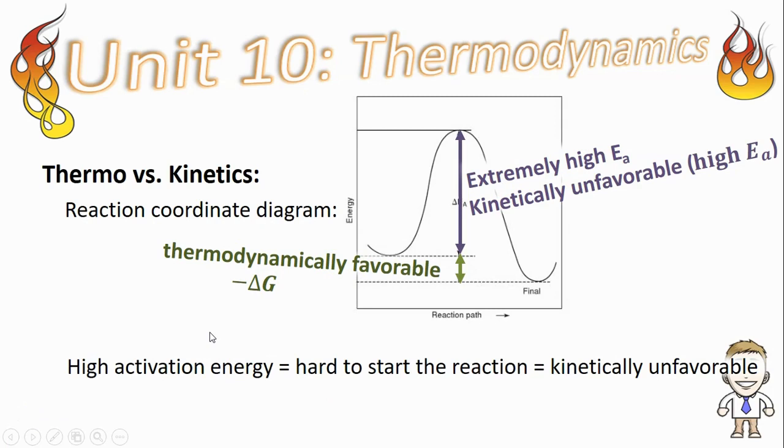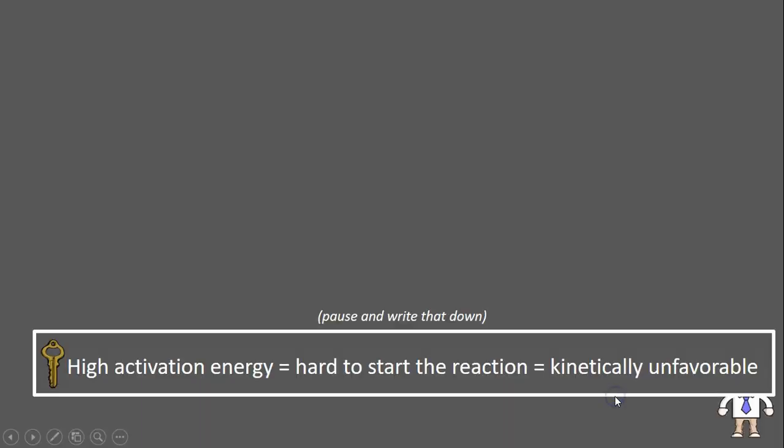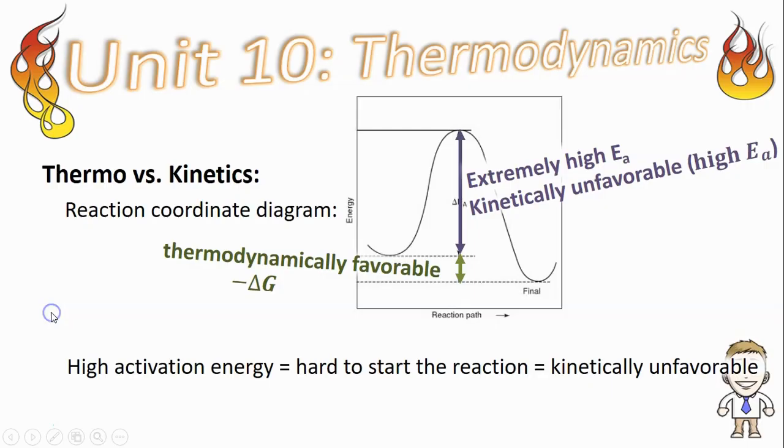A nice series of summary statements to describe this can be found below. High activation energies result in a reaction that's very hard to start or very slow. This is called being kinetically unfavorable. That's our main idea for this video so make sure you pause and take a minute to write that down.